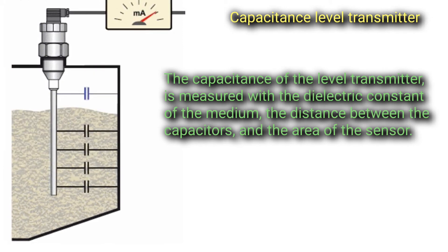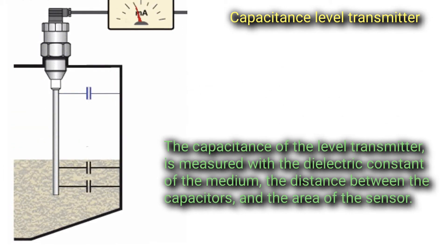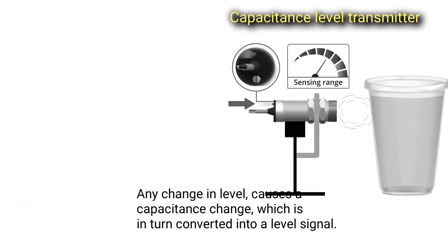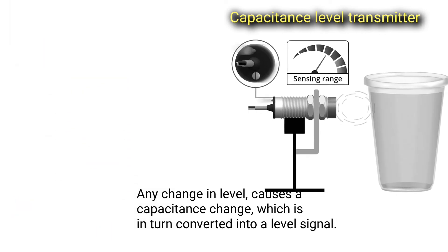The capacitance of the level transmitter is measured with the dielectric constant of the medium, the distance between the capacitors, and the area of the sensor. Any change in level causes a capacitance change which is in turn converted into a level signal.